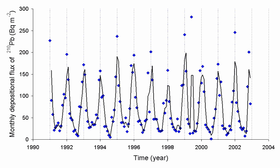222 Rn belongs to the radium and uranium-238 decay chain, and has a half-life of 3.8235 days. Its four first products are very short-lived, meaning that the corresponding disintegrations are indicative of the initial radon distribution. Its decay goes through the following sequence: 222 Rn (3.82 days) alpha decaying to 218 Po (3.10 minutes), alpha decaying to 214 Pb (26.8 minutes), beta decaying to